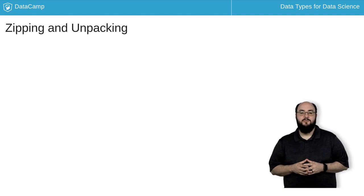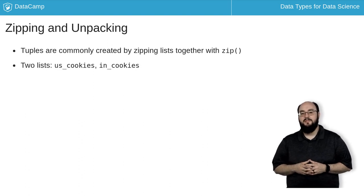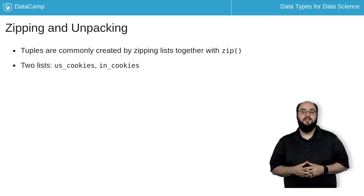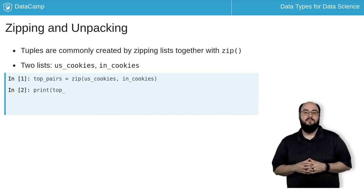Often we'll have lists where we want to match up elements into pairs, and the zip function enables us to do that. Here I've got a list for the most popular cookies in the US and India, and I want to build a list of pairs by the popularity rank of the cookie in each country. I'll pass them to the zip function, then I can print the result of my zip.